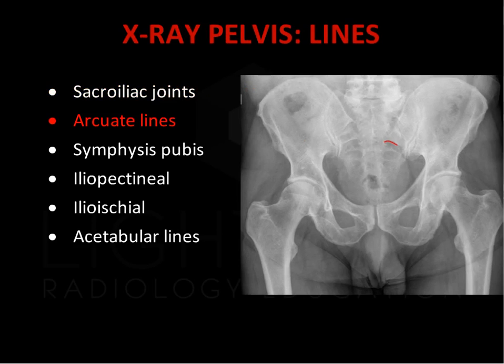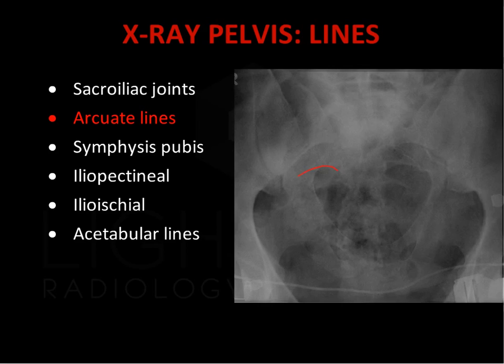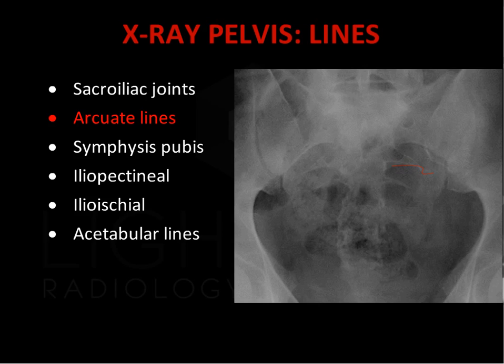The arcuate lines are formed by the cortical margins of the anterior sacral foramina. Asymmetry with disruption of the smooth arcuate lines is a sign of a sacral fracture.